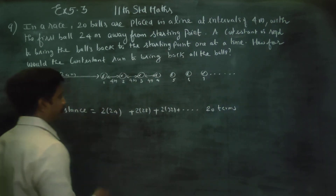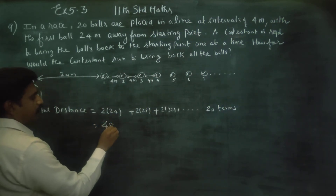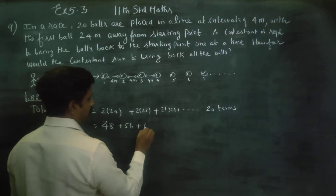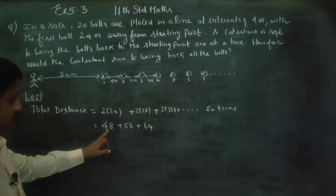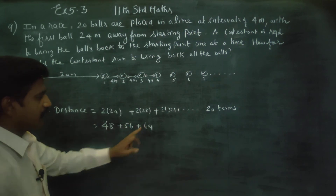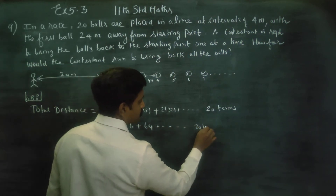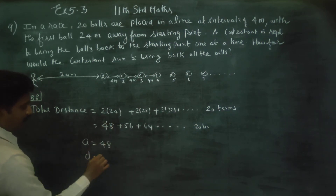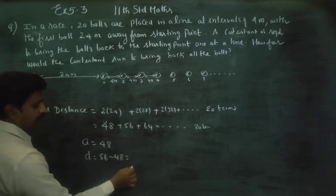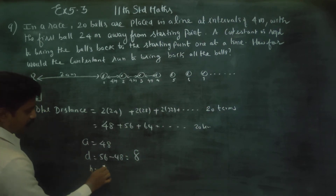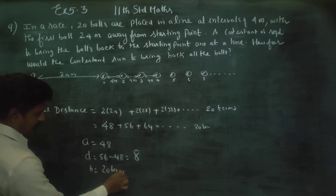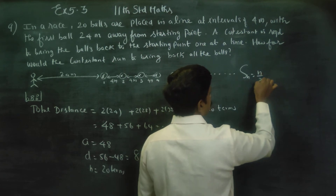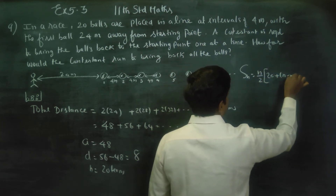There are 20 terms. The sequence is 48, 56, 64... The common difference is 8. A is equal to 48. Common difference d is equal to T2 minus T1, which is 56 minus 48, giving 8. N is equal to 20 terms. We need to find the total distance Sn, where Sn equals N by 2 times (2A plus N minus 1 into D).